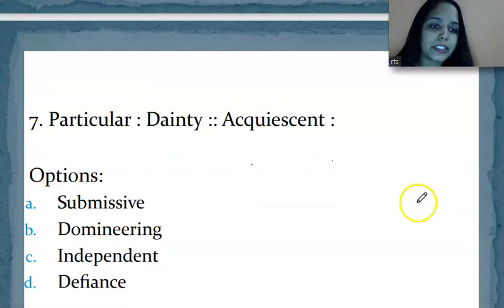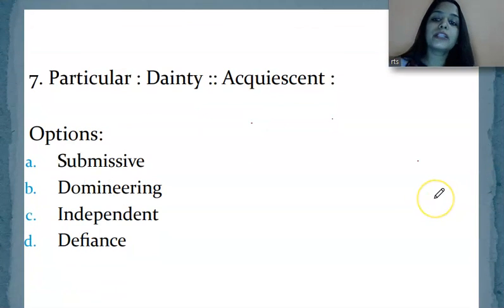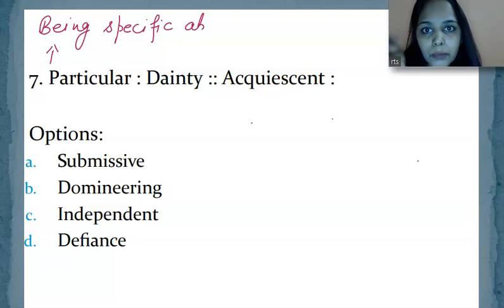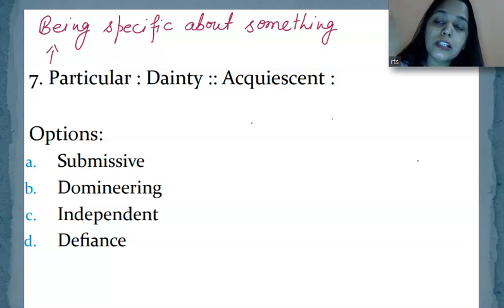Move on to the next question. And the next question is vocabulary related. Particular is related to dainty, in the same way acquiescent is related to which one? You see, particular means being specific about something. Particular means being specific or demanding about something, specific about something.